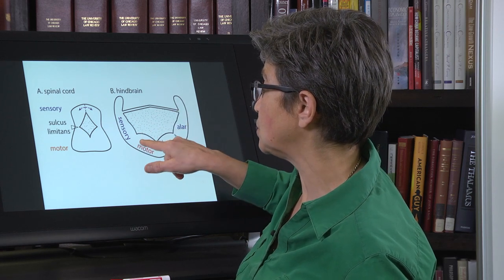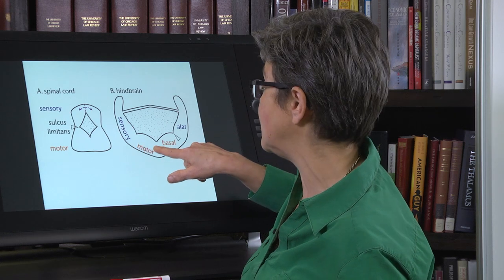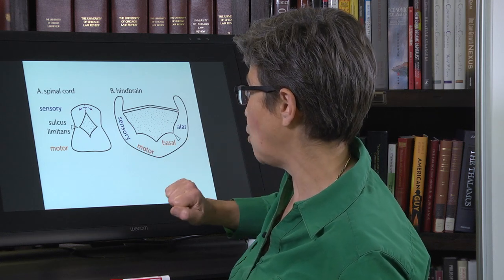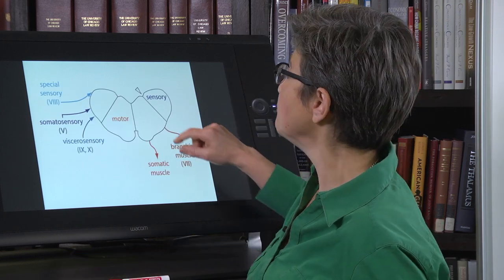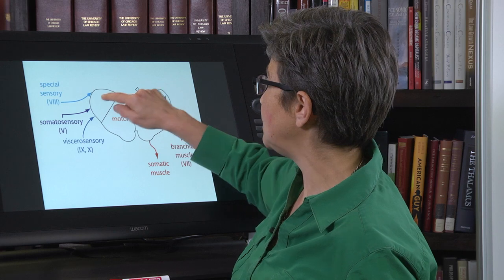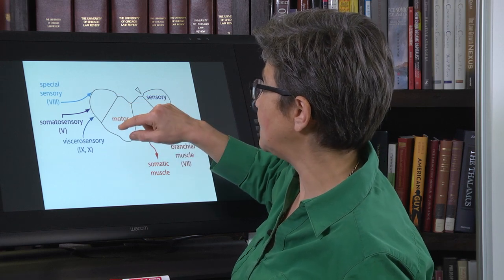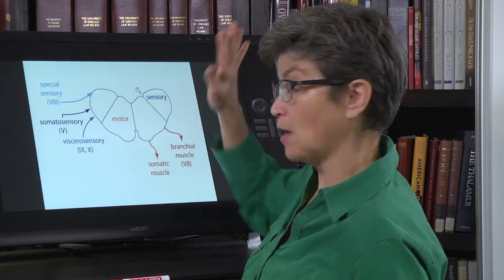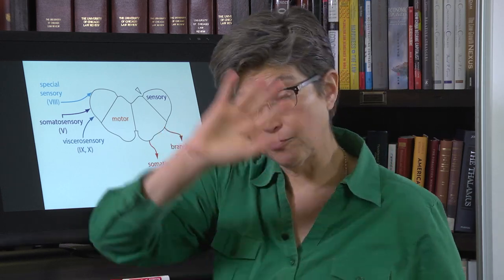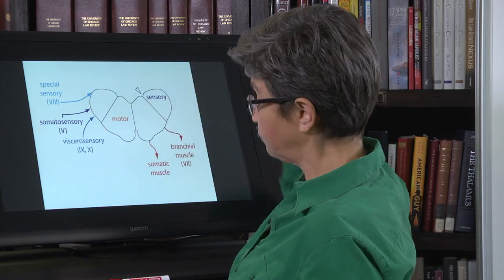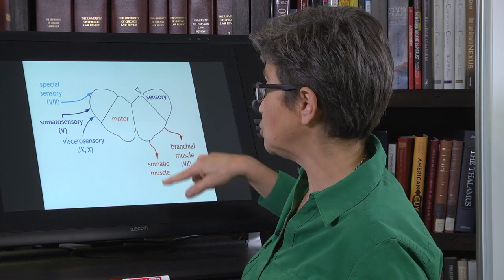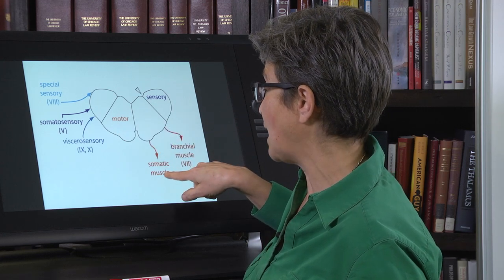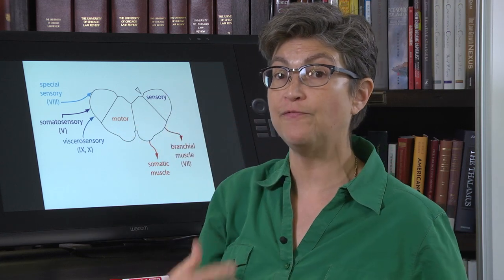We can go one step further: there's a somatosensory column, an autonomic motor column, and a skeletal motor column. With that framework, we can now place the brainstem cranial nerves on this diagram — this excludes the optic and olfactory nerves.